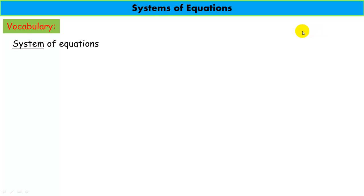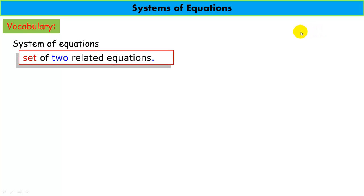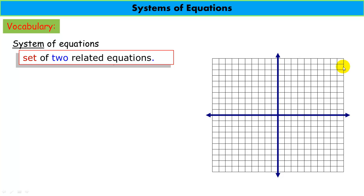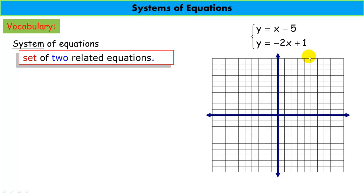What is a system of equations? A system of equations is a set of two related equations. So if we have a graph and we have what we call a system of equations, notice the set — see our bracket here — of two related equations. That means these two linear equations are related, and graphically speaking, we can graph them on one axis. Here are these two lines, graphically represented.